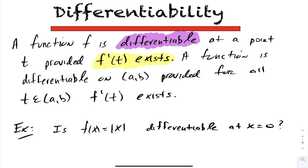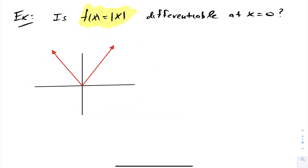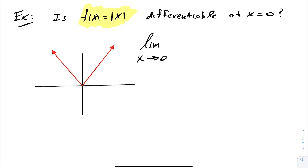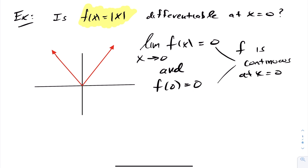Let's look at an example. For this first example, we're given the function absolute value of x. Now visually, absolute value of x looks like this. If you take a look at the limit as x approaches 0 — as discussed in an earlier lesson — as we approach 0 from the left or right-hand side, the limit exists and is actually equal to 0. We also discovered that the function at 0 of the absolute value is also 0. So from this, we came to the conclusion that f is continuous at x equals 0.